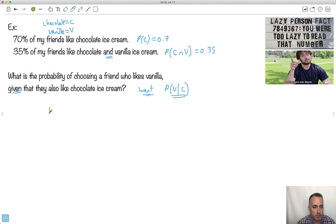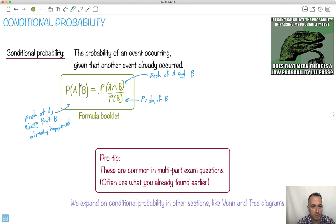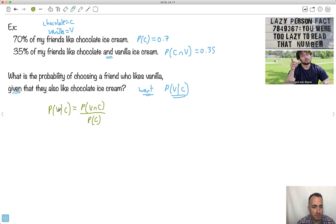So let's use it. Probability of something, given something else, is equal to the probability of the two things occurring together, divided by the probability of the second thing. I'm using this equation, right? Probability of A given B is A and B over B. Probabilities, of course. Probability of V given C is V and C over C. All we've got to do then is just put the numbers in. Do you see? It's actually really not that hard. That's the key.